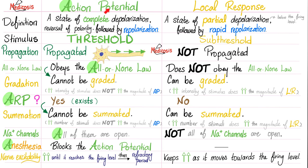If you treat me with respect, I'll treat you with respect. If you treat me with no respect, I'll treat you with no respect. Action potential is propagated; local response is not propagated. Action potential obeys the all or none law; local response does not. Action potential cannot be graded — because it obeys the all or none law. It's either zero or one.